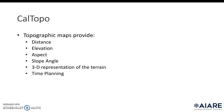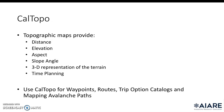CalTOPO is digital mapping software — you can create custom topographic maps. Maps are really helpful for backcountry travel for a whole host of reasons, not just for creating trip option catalogs, but maps give us an idea of distance, elevation, aspect, and slope angle. They give us a 3D representation of the terrain as we use the contour lines to see the terrain come to life, which can help with time planning. We use CalTOPO for waypoints, routes, trip option catalogs, and mapping avalanche paths.